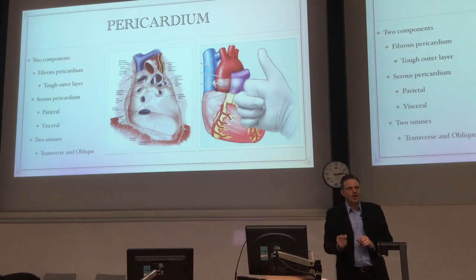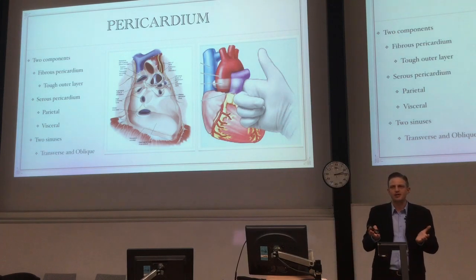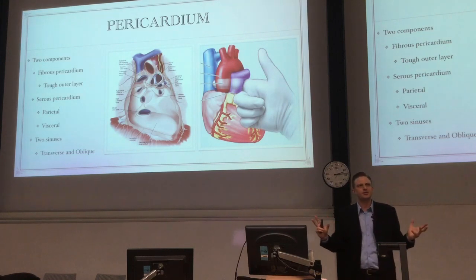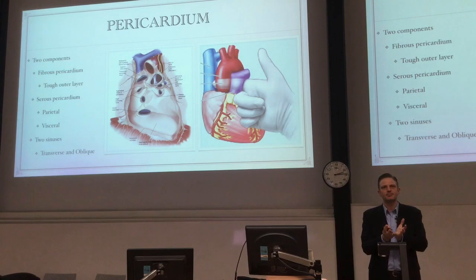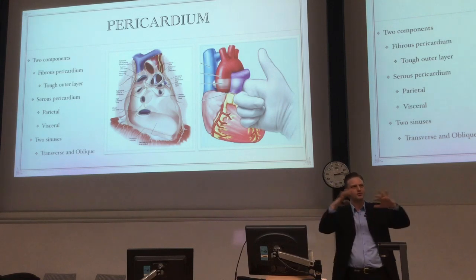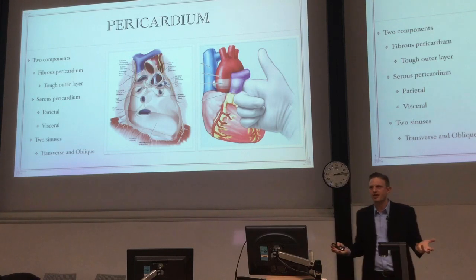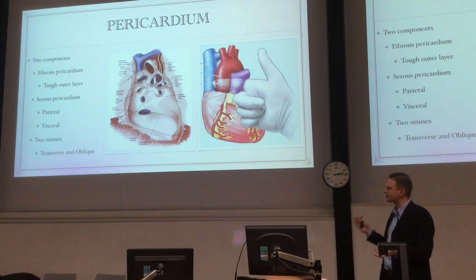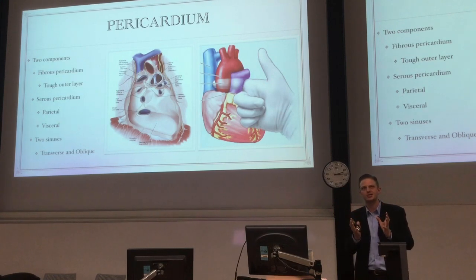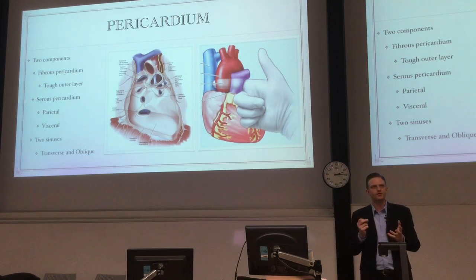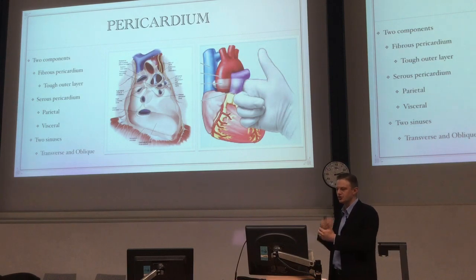The serous pericardium is very different — it's just a layer of serosa, made of a single layer of mesothelial cells that sit on the inside of the fibrous pericardium, go right the way around, reflect off the vessels, and actually line the heart. Like any serous membrane in the body, its function is lubrication. It creates a potential space with a small volume of fluid that allows the heart to move around in a friction-reduced environment.